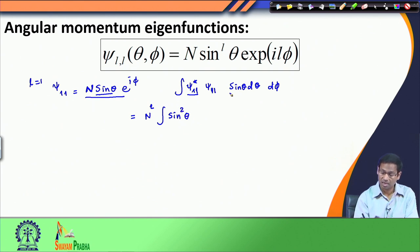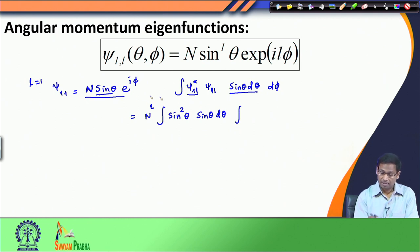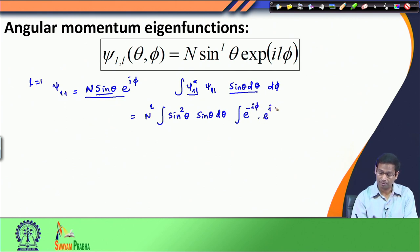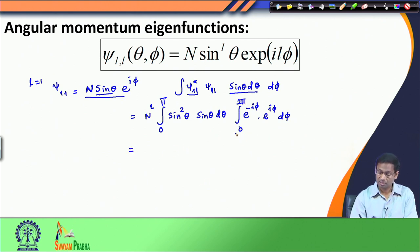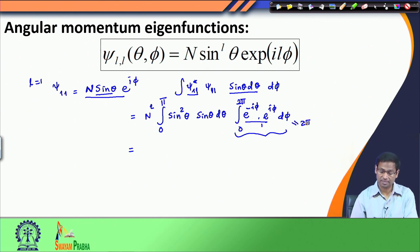For psi_11 and psi_11^star, both contribute sin(theta), giving sin^2(theta). Then I include the sin(theta)d(theta) from the volume element. For the phi part, the complex conjugate of e^(i*phi) is e^(-i*phi), so e^(-i*phi) times e^(i*phi) gives 1. Therefore the phi integral from 0 to 2pi gives 2pi. The theta integral runs from 0 to pi.